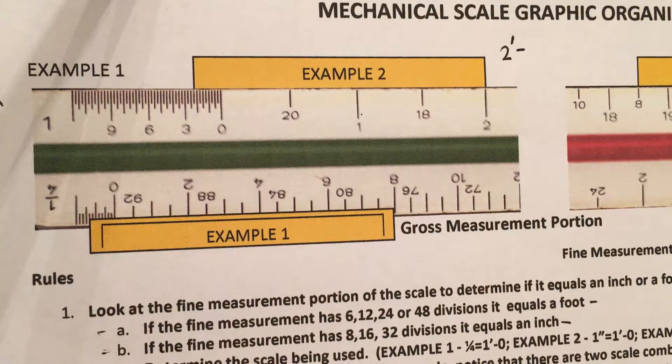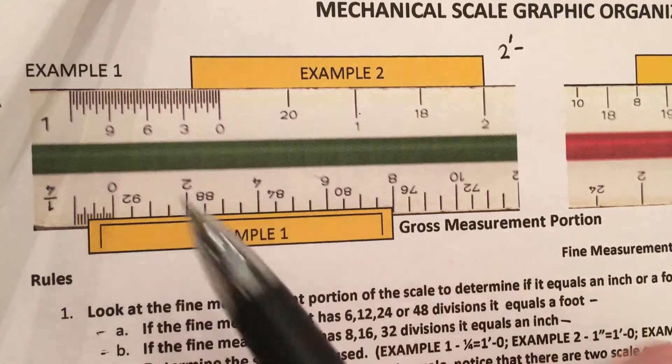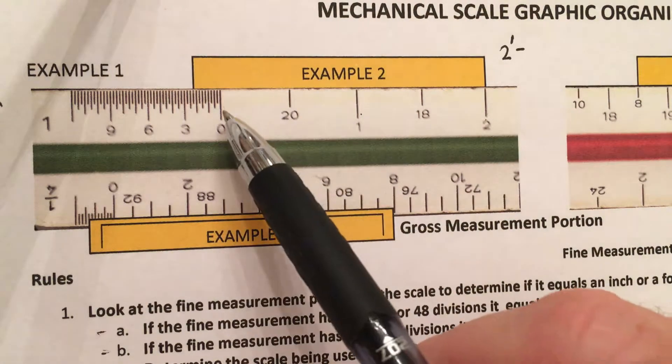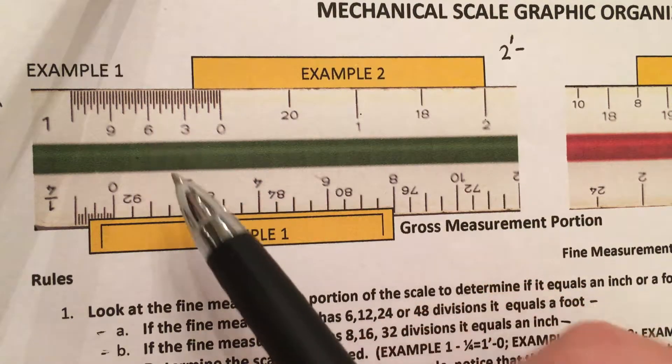Now, then I'm going to look at my gross measurement. I know that this distance right here represents a foot, and I also know that there are twelve inches in a foot. And I know that one, two, three, four, five, six inches is half of a foot.